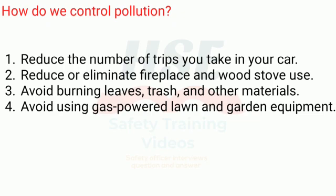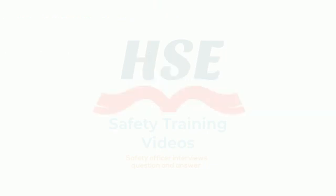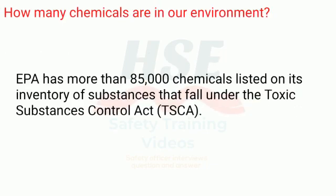Additional steps to control pollution include: avoid burning leaves, trash, and other materials; and avoid using gas-powered lawn and garden equipment. Regarding how many chemicals are in our environment, the EPA has more than 85,000 chemicals listed on its inventory of substances that fall under the Toxic Substances Control Act (TSCA).